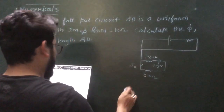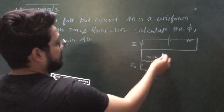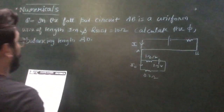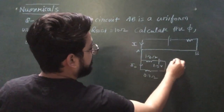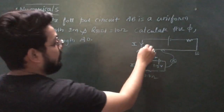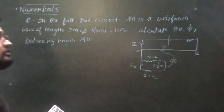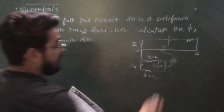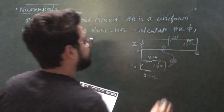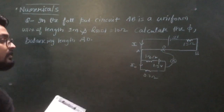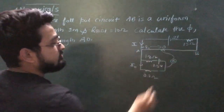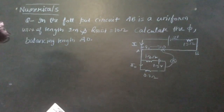This wire is AB and this is the null point. The galvanometer has a null point and this length is AO. The voltage is 2 volts and the resistance is 15 ohm. Let's say this length is L1. The total wire length is 1 meter.